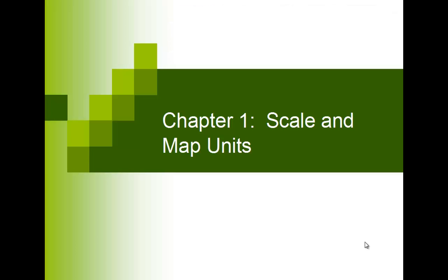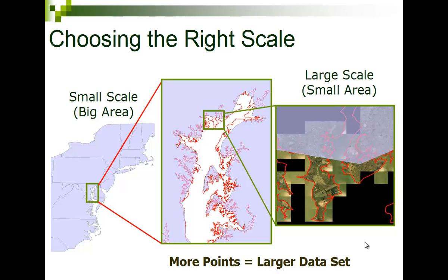We're going to talk about scale and units. We need to choose the right scale. Here we have a couple of different GIS data layers for the Chesapeake Bay area. The blue one represents it at a national scale — not a lot of accuracy, looks a little choppy. It doesn't look bad for the entire United States, but when you zoom in, you can see how poorly it renders. Here you can see all the county outlines — different detail levels. One is a detail layer, another is a general layer, because storing all those vertices takes a lot of space.